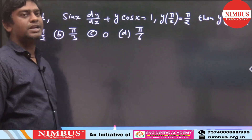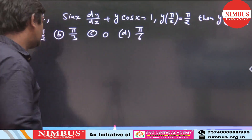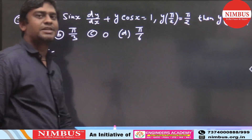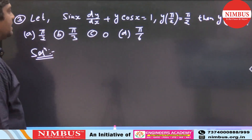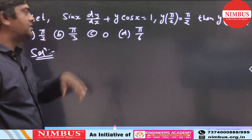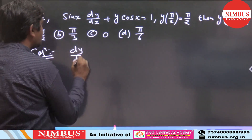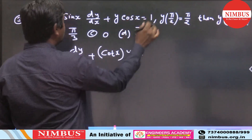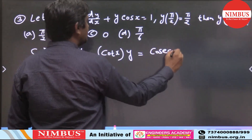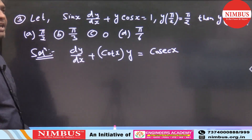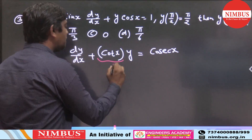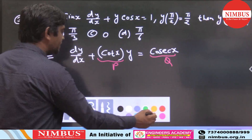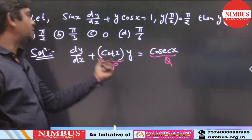This is a question from differential equations — a linear (Leibnitz) differential equation. A differential equation is given, a boundary condition is given, and we have to find the value of y at x = π/6. The first thing we do is divide the equation by sin x. So we get dy/dx + (cos x / sin x)·y = 1/sin x, that is dy/dx + cot(x)·y = cosec(x). This is the Leibnitz differential equation where P and Q are functions of x.